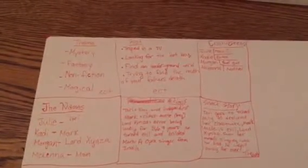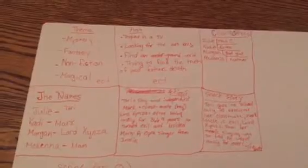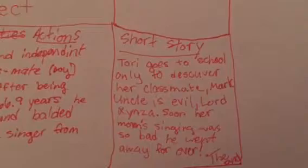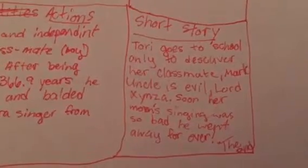Then you write a short story to plan it all out. Since it's a series, this would typically cover the entire arc. For example, mine is: 'Tori goes to school only to discover her classmate Mark's uncle is the evil Lord Zienza. Soon, her mom's singing was so bad he went away forever. The end.' You'd sum up your whole story like that.